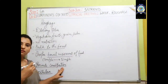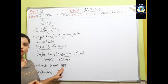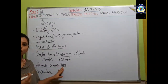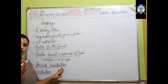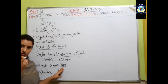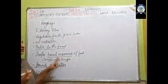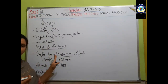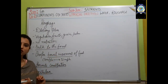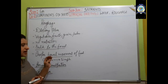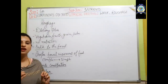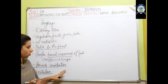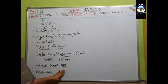Constipation means when we pass stools or undigested matter through the body, they become a little bit harder. Dietary fiber in our diet helps soften that stool, leading to proper bowel movement and making it easy to pass stools. That is all about the first objective — roughage.